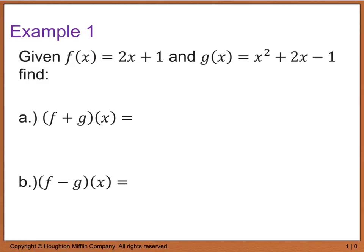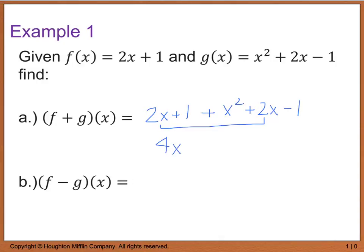Example one says, given that f(x) is 2x plus 1, and g(x) is equal to x squared plus 2x minus 1, we want to find the sum, f plus g of x. So I'm going to take 2x plus 1, which is f(x), and add that to my g(x), which is x squared plus 2x minus 1, and collect my like terms. So 2x plus 2x gives me 4x, and 1 and negative 1 cancel, leaving x squared out front. So I end up with x squared plus 4x as my final solution.